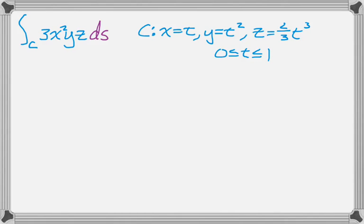So the first thing I'm going to do is actually calculate the ds. So ds is square root of, and then it's x prime squared, which will be x prime is 1, so that's 1.